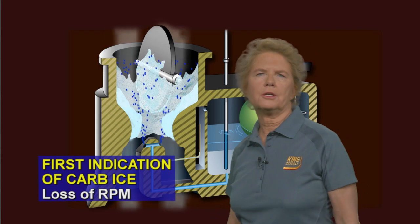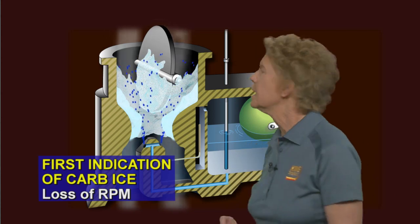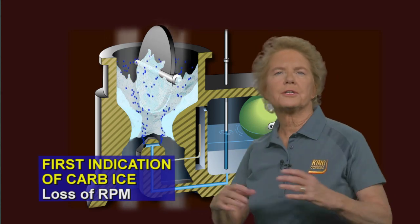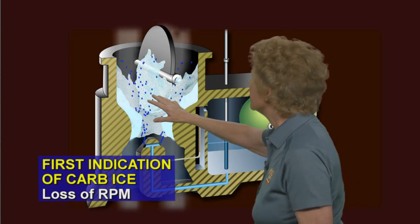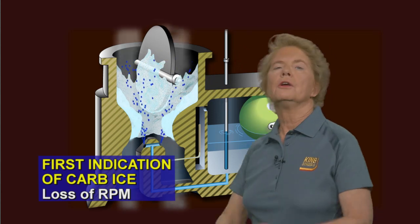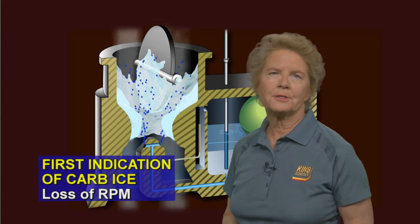The first indication that you're likely to have of carburetor ice in an aircraft that has a fixed-pitch propeller is going to be loss of engine RPM. Because it's the same idea as if you've closed the throttle, pulled the throttle back. If you've got ice blocking the flow of air through the carburetor, you're going to have a loss of engine RPM in an aircraft that has a fixed-pitch propeller.